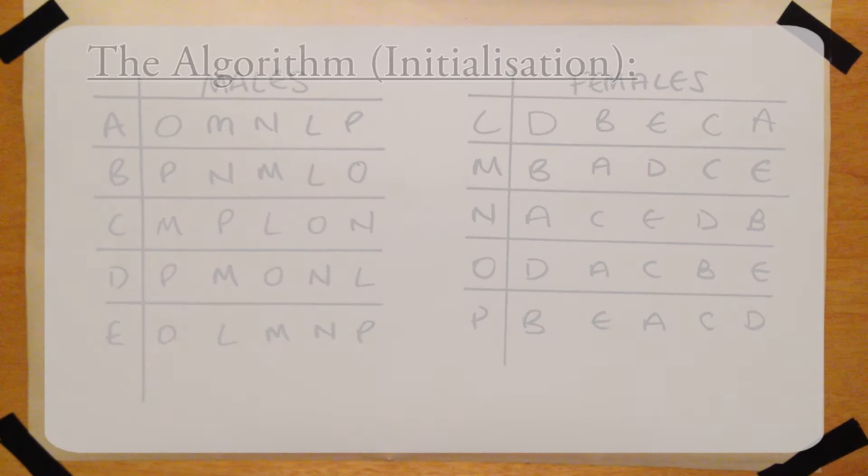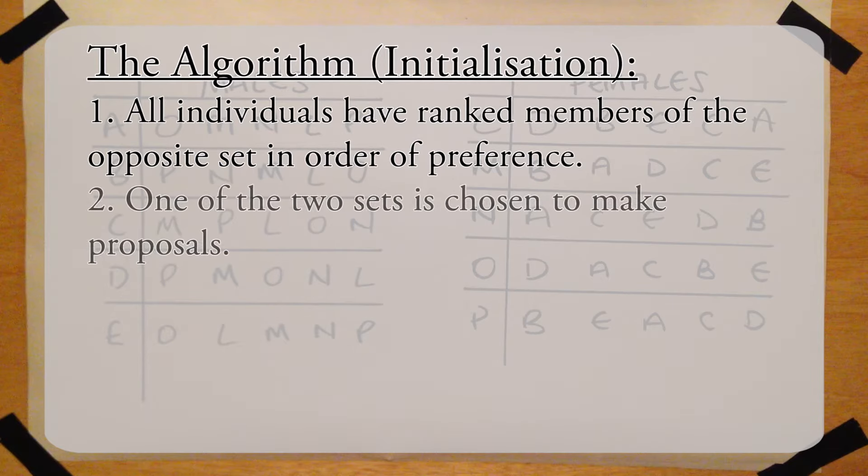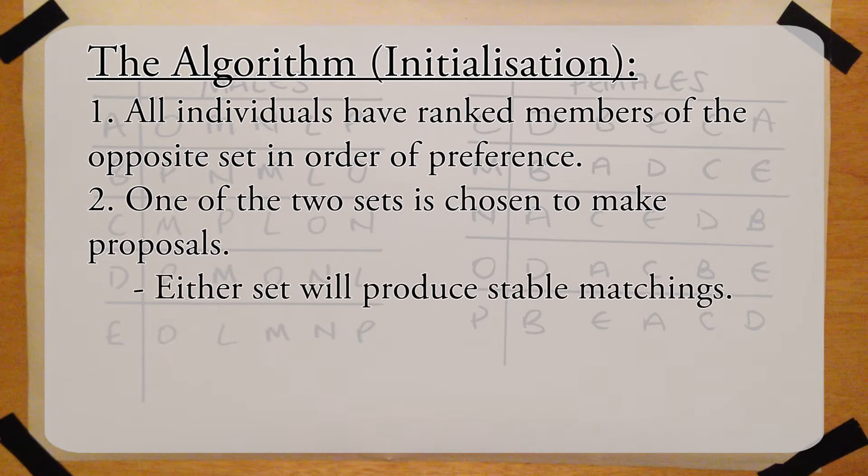The Gale-Shapley algorithm itself is fairly simple. To begin, it is expected that each person has a strict ranking of members of the opposite group. One of the two sets is chosen to make what we will call proposals. While choosing either set will produce a stable matching, the matching produced may be different, but that is something we will look at later.